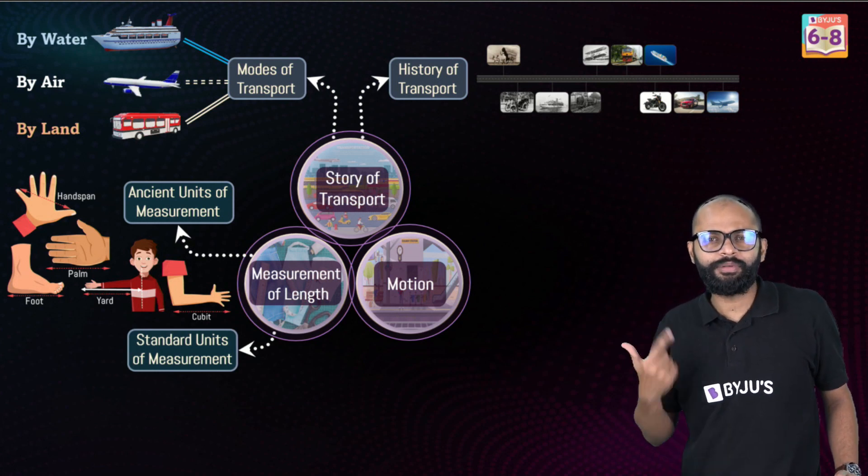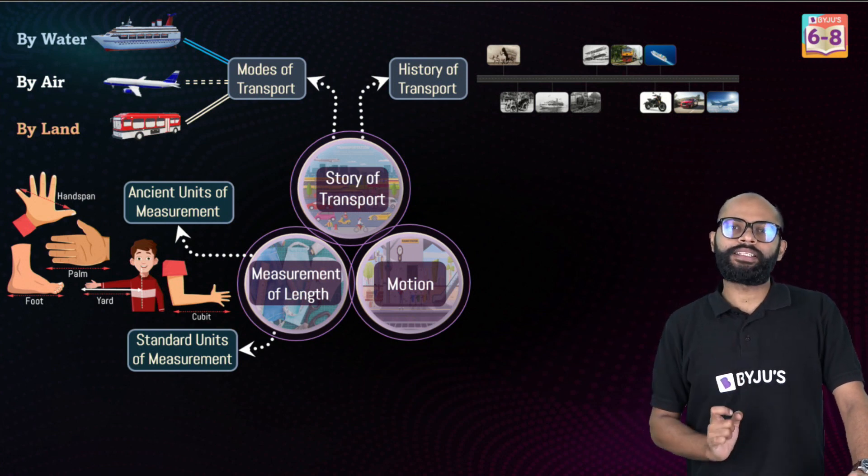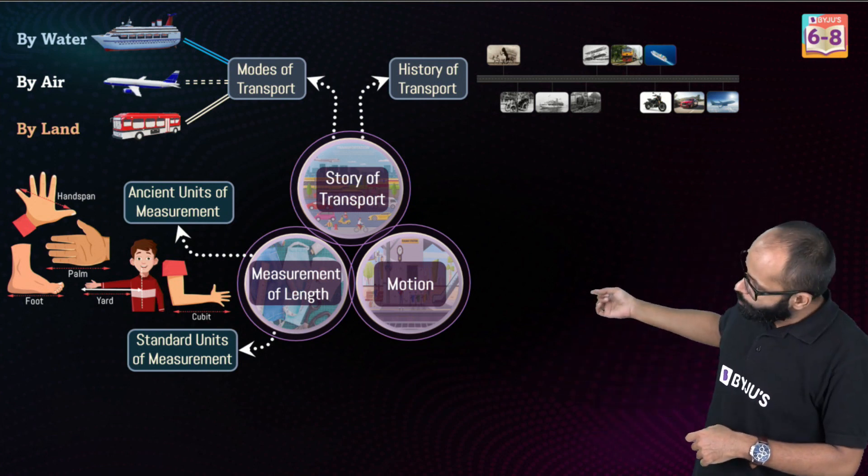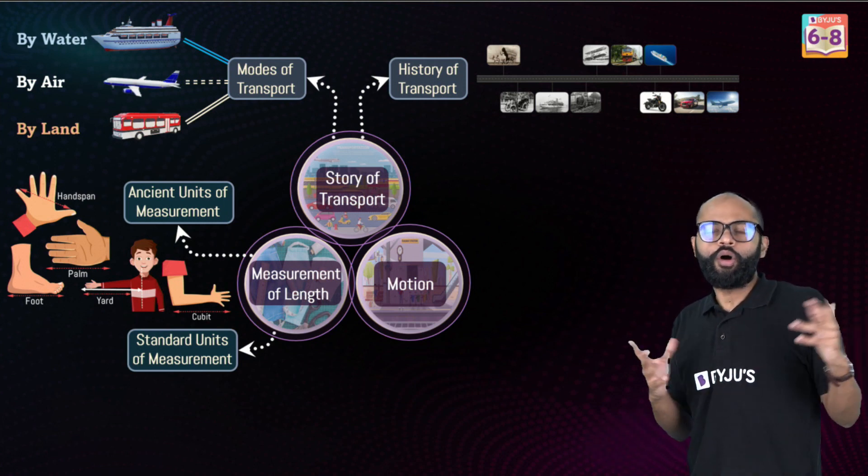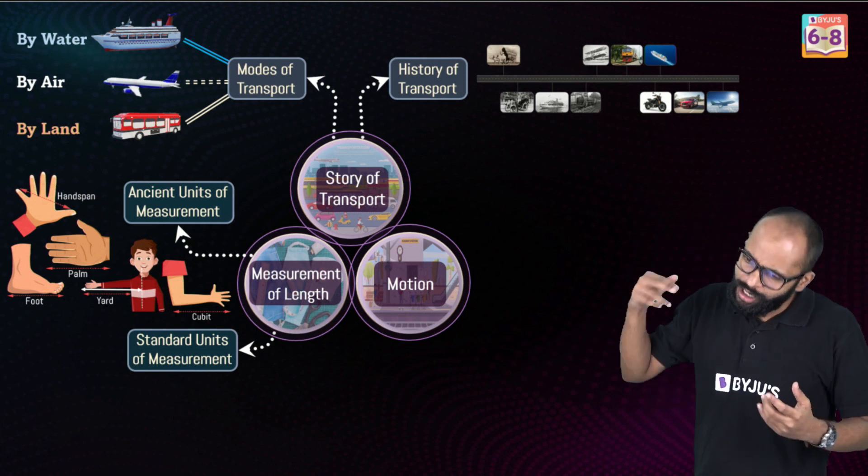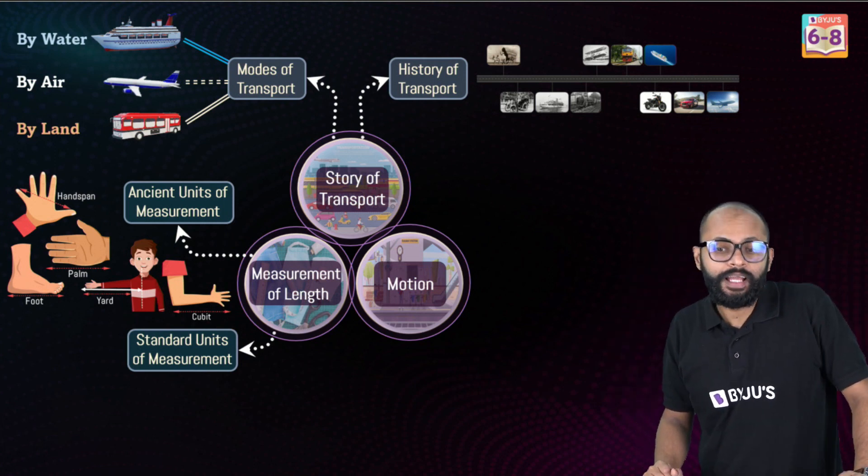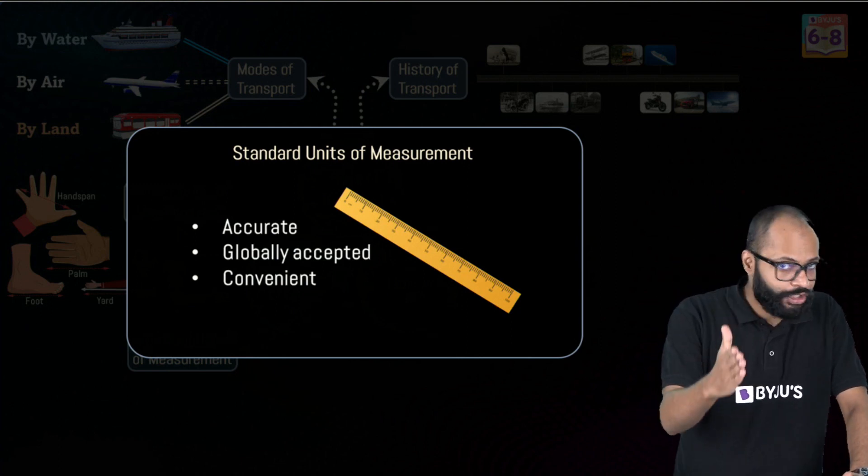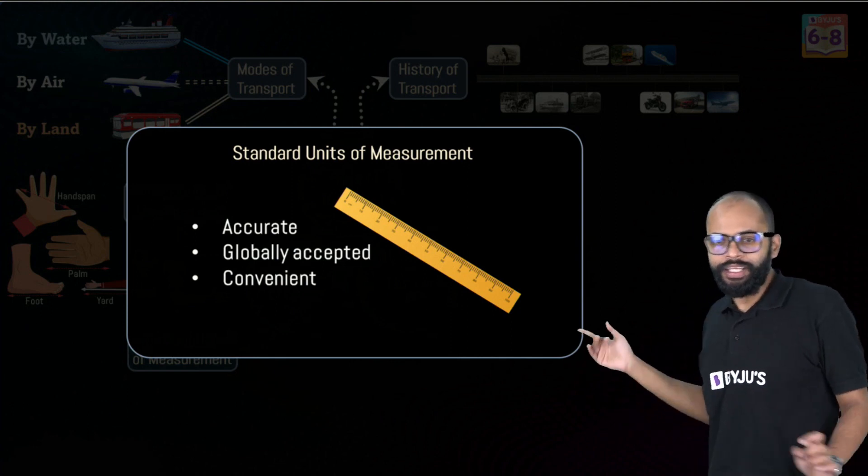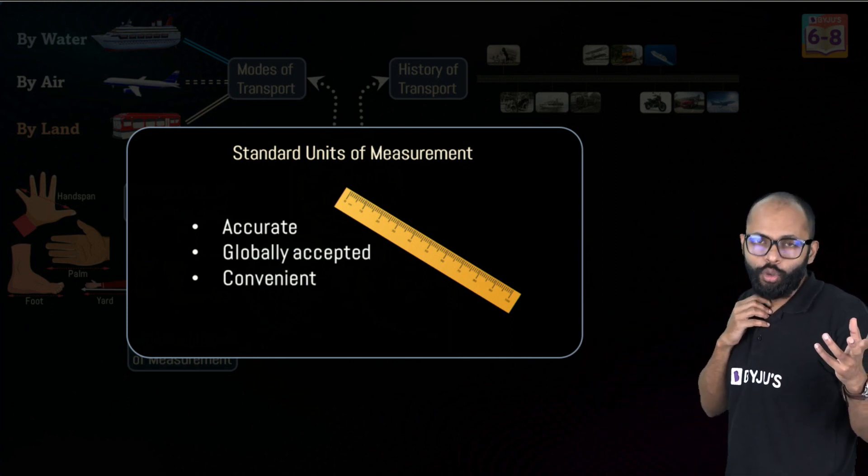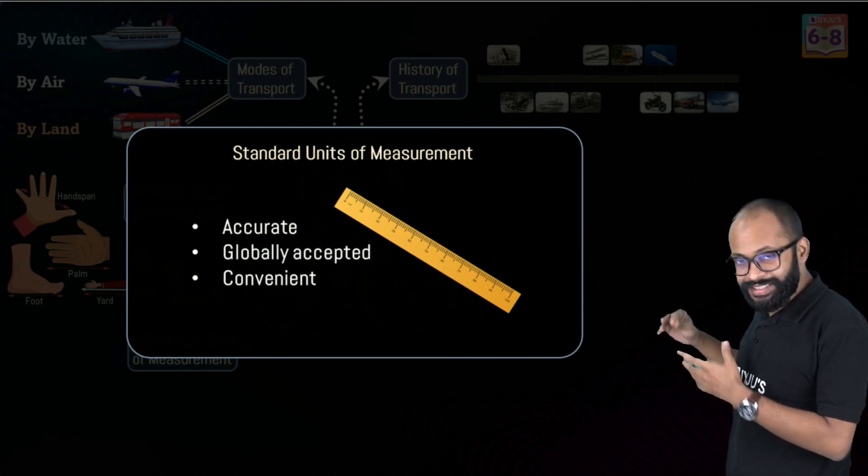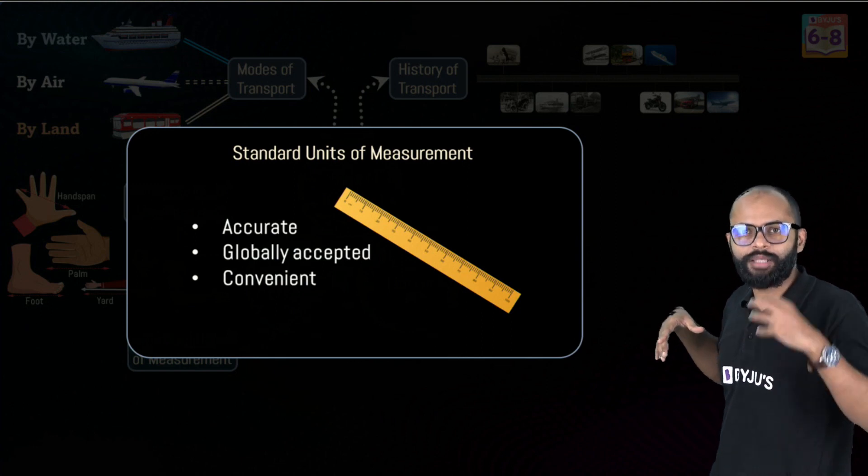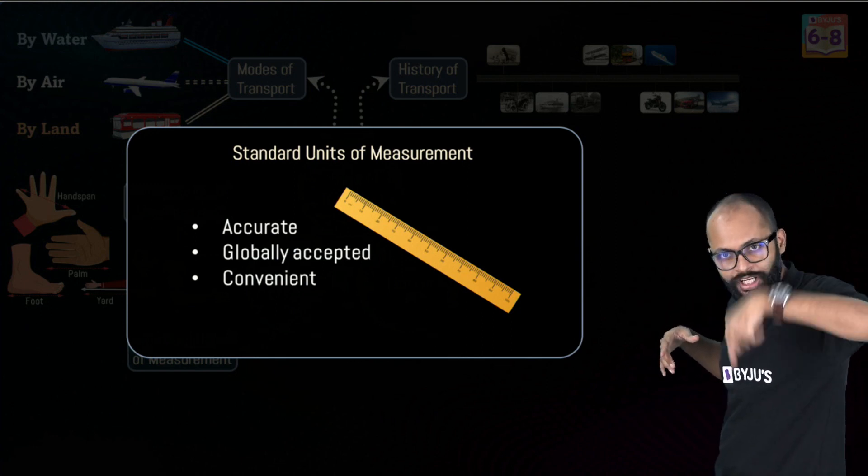Standard units of measurement - how did we overcome this? This was a very big problem and it would have been chaotic. In today's time if you order something from Amazon or Flipkart, you don't think if length is 10 centimeter - I know how much it is. Why? Because we have standard units of measurement. Why did we switch towards standard units? Because they are accurate, they are globally accepted, and they are convenient. Why don't we use ancient units? Because they are inaccurate, they are not globally accepted, they are not convenient.